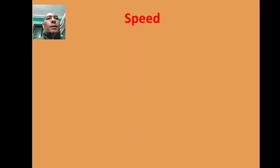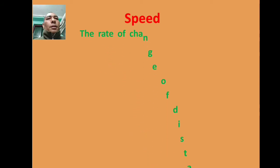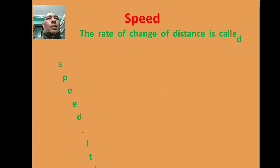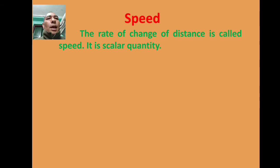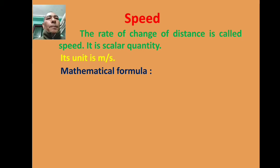Speed: The rate of change of distance is called speed. It is a scalar quantity. Its unit is meter per second. Mathematical formula: Speed equals distance divided by time.